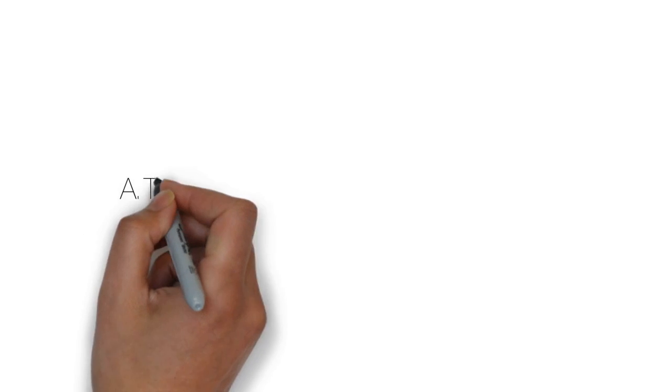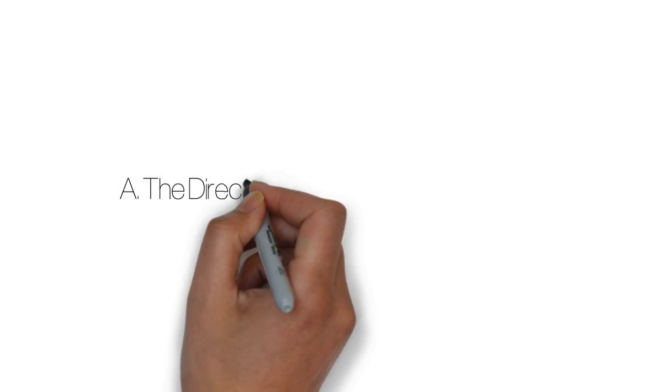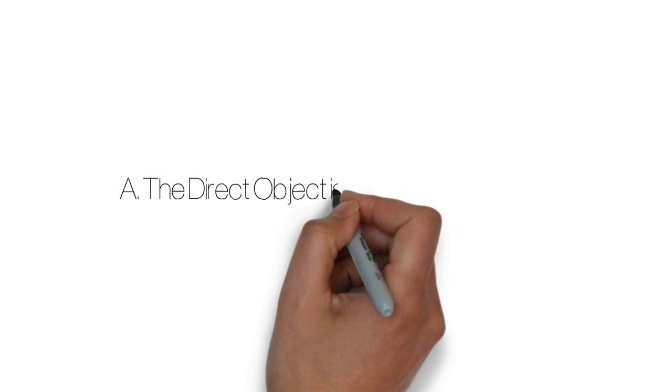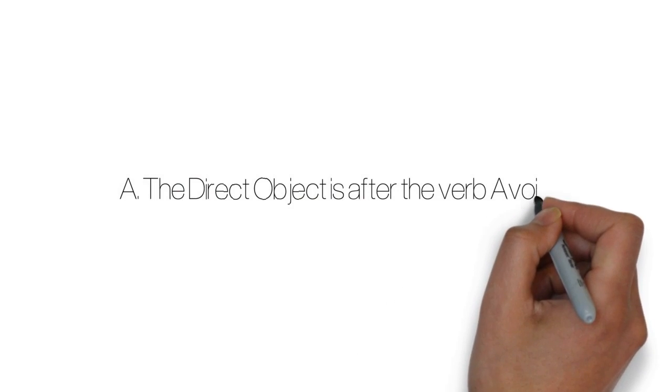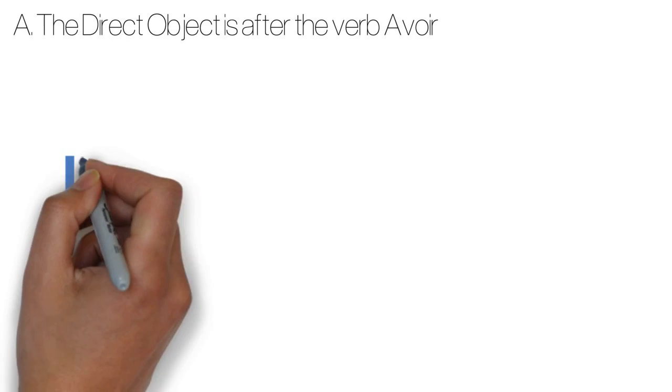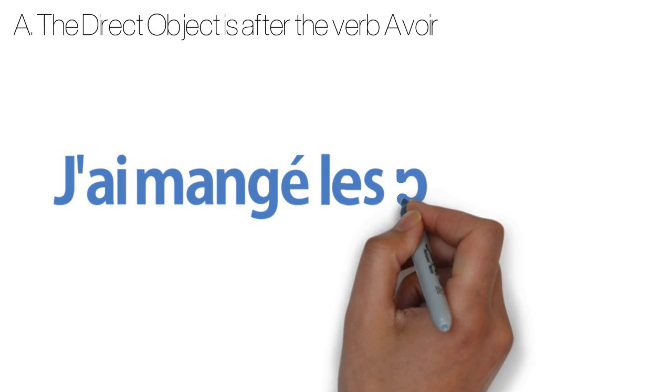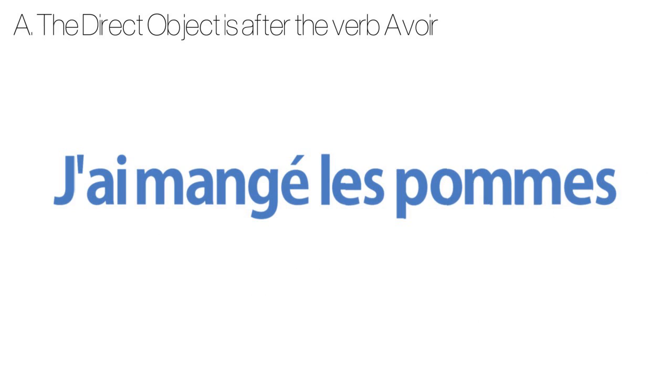So let's start first when the direct object of our sentence is after the verb avoir. With this example, j'ai mangé les pommes. I ate the apples.